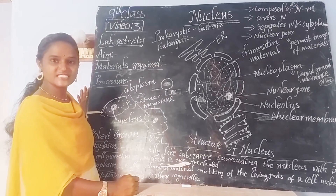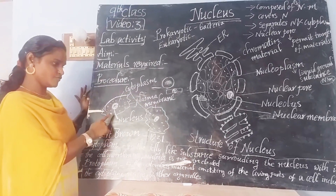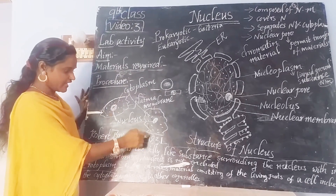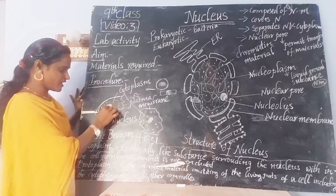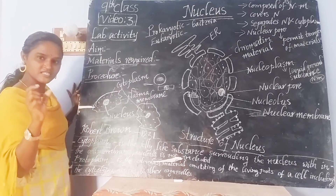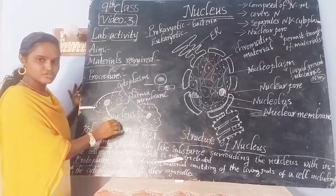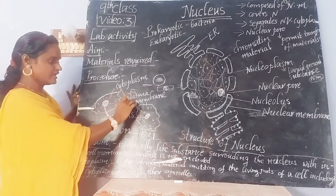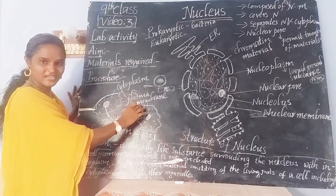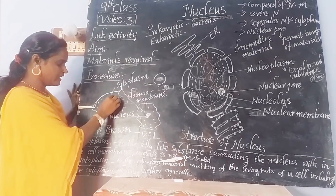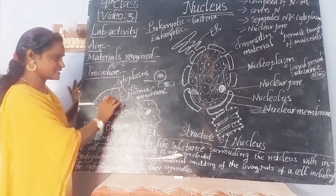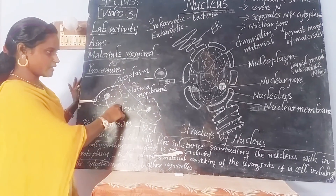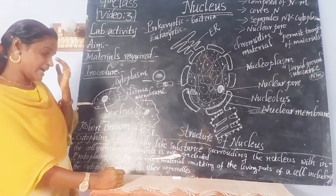When you observe the cells, you will be able to find the cheek cells. In the middle, you will find a dark, dark-like structure — that is the nucleus. The outer layer of the cell is the plasma membrane or cell membrane. In the middle, there is a fluid content called cytoplasm. You are able to find all of this through this activity.